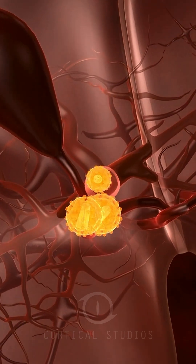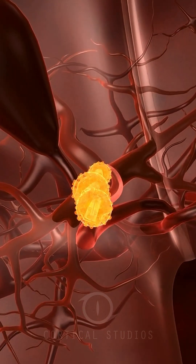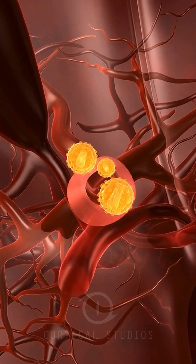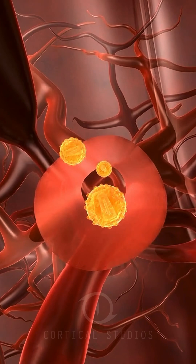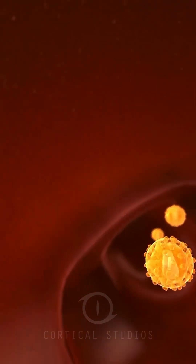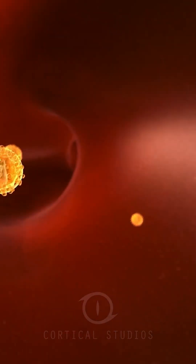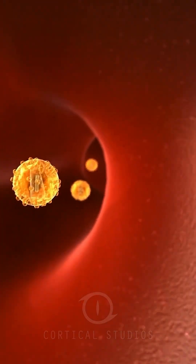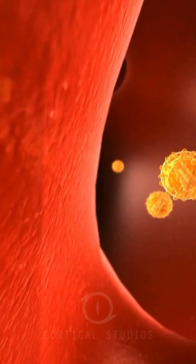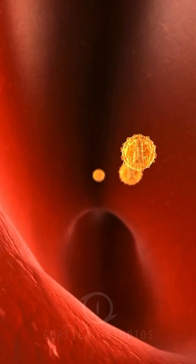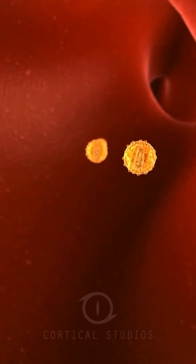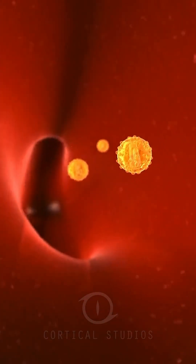Virus particles containing the therapeutic gene enter the liver with the bloodstream. Their target is the region where liver cells exchange matter with the blood — the small capillaries.